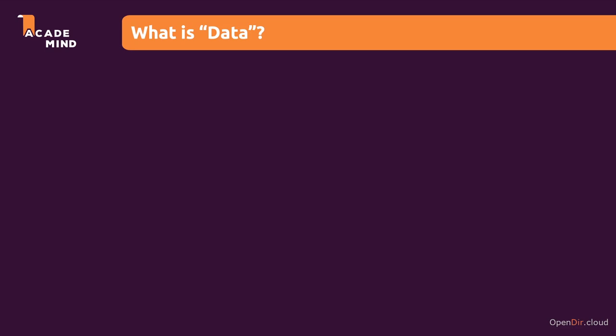Before we write any code and explore any special Django features, let's dive into one simple yet important question: What is data? Data, in the end, is all the values we're working with in our application. For example, that could be the monthly challenges we have, the products we have in a store, or the blog posts we have in a blog.